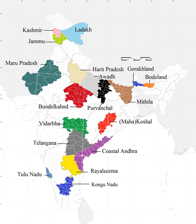Komtapur lies in the northern parts of West Bengal. The proposed state consists of the districts of Koch Behar, Jalpaiguri, and the southern plains of Darjeeling, including Silaguri city.